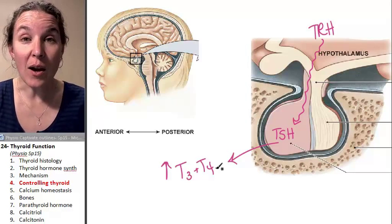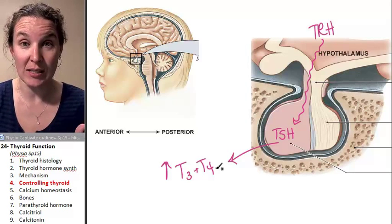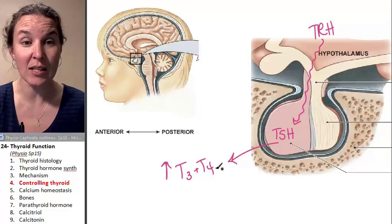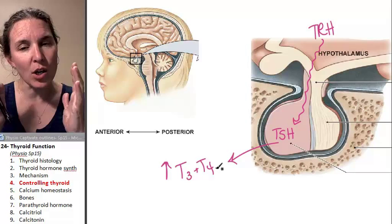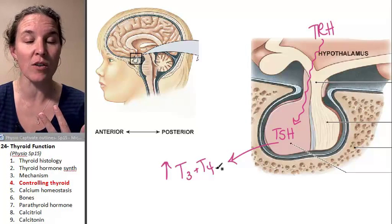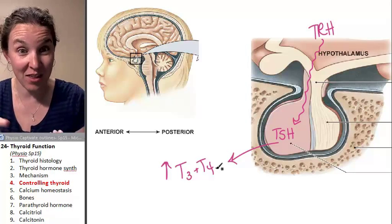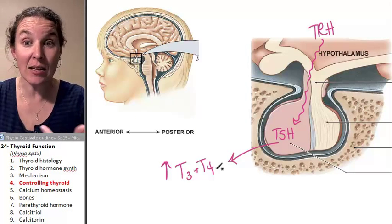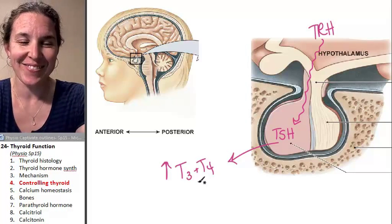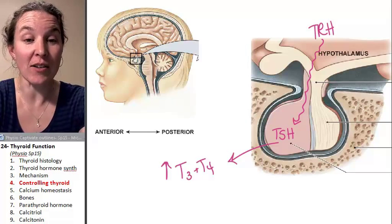The thyroid gland is also involved in calcium homeostasis, and there are lots of other things involved in calcium homeostasis as well. So we're going to look at an overview of calcium homeostasis, how bones are involved, and then the hormones produced by the thyroid gland and the parathyroid glands. We'll spend the rest of the lecture talking about calcium.